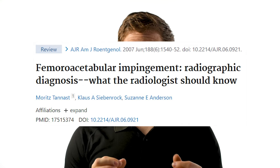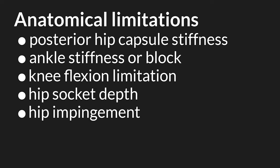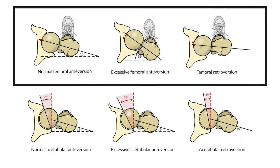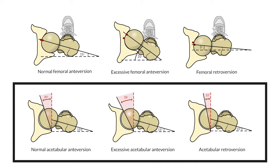If you want to dive deeper, here's a research article on how a radiologist examines hip impingement. Anteversion and retroversion describe the resting orientation of the hip joint. An anteverted joint is more open in the front, while a retroverted joint is more open in the back. For each of these there are two subtypes: femoral, a twisting of the shaft of the femur, and acetabular, a twisting of the hip socket.